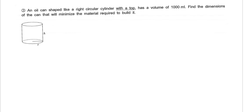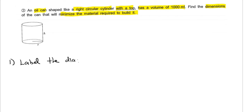For question number three, I have an oil can shaped like a right circular cylinder with a top, and it has a volume of 1,000 milliliters. I want to find the dimensions of the can that will minimize the material required to build it. The diagram is already labeled — we're not using x and y anymore, we're using r and h.